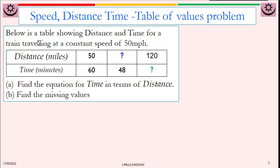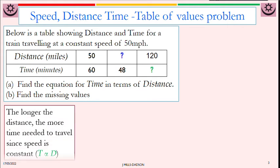Let's look at another example. Speed, distance, time. Below is a table showing distance and time for a train traveling at a constant speed of 50 miles per hour. Find the equation for time in terms of distance and find the missing values. The first thing you need to understand is the relationship between distance and time. Since the train is traveling at a constant speed, the longer the distance, the more time you need to complete the journey. That is direct proportion.